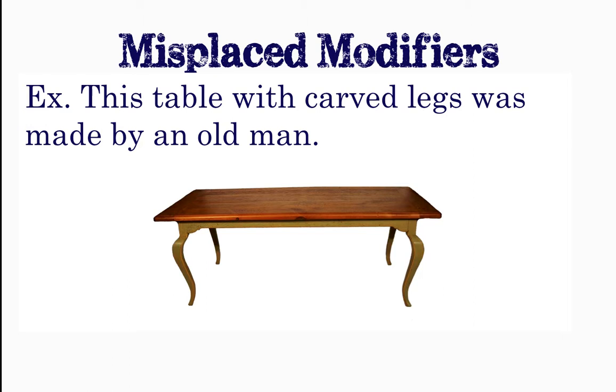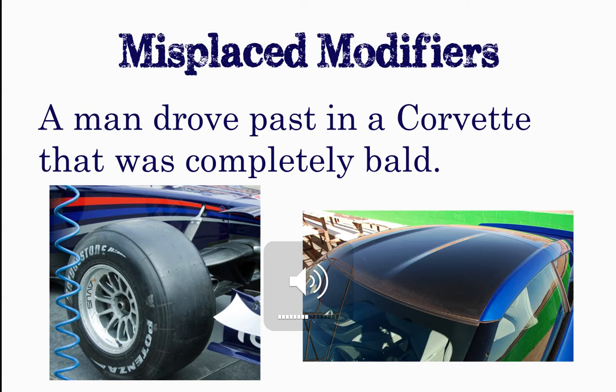See the difference: 'This table with carved legs was made by an old man.' That makes more sense.